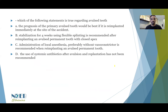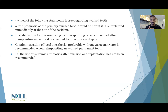The question asks: which of the following statements is true regarding avulsed teeth? Option A: the prognosis of the primary avulsed tooth would be best if it is re-implanted immediately at the site of the accident. Option B: stabilization for four weeks using flexible splinting is recommended after re-implanting an avulsed permanent tooth with closed apices. Option C: administration of local anesthesia, preferably without vasoconstrictor, is recommended when re-implanting an avulsed permanent tooth. Option D: the use of systemic antibiotics after avulsion and re-implantation has not been recommended.